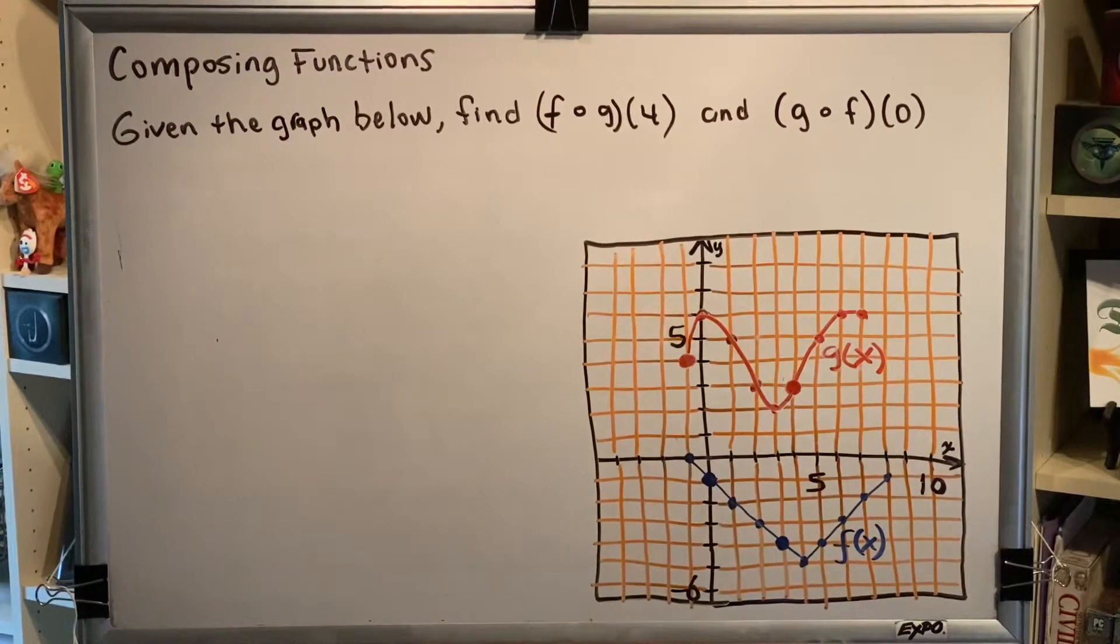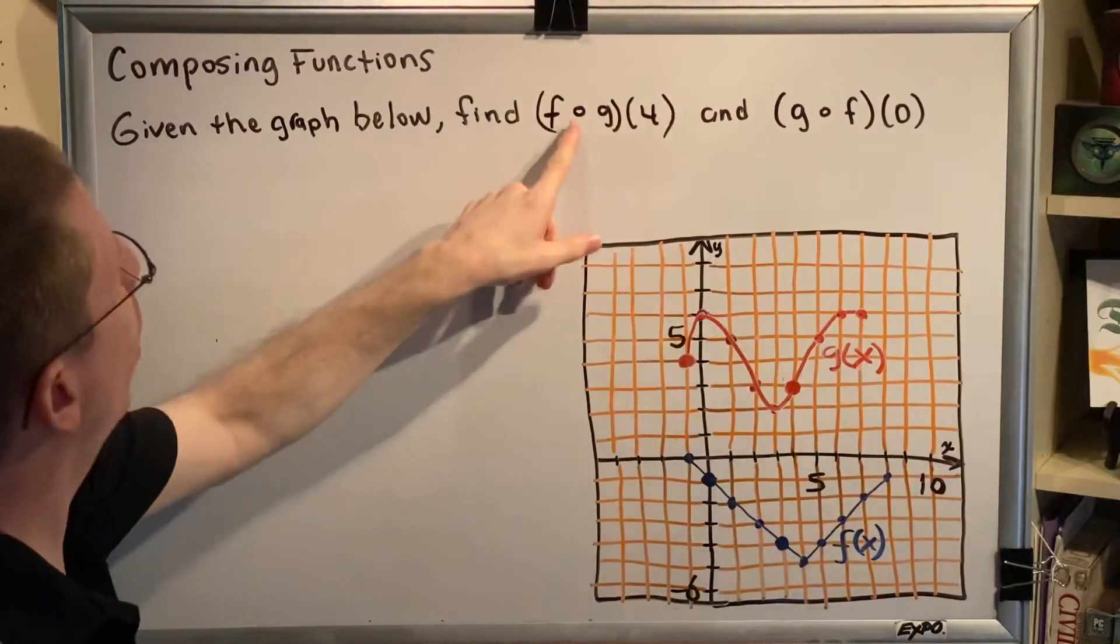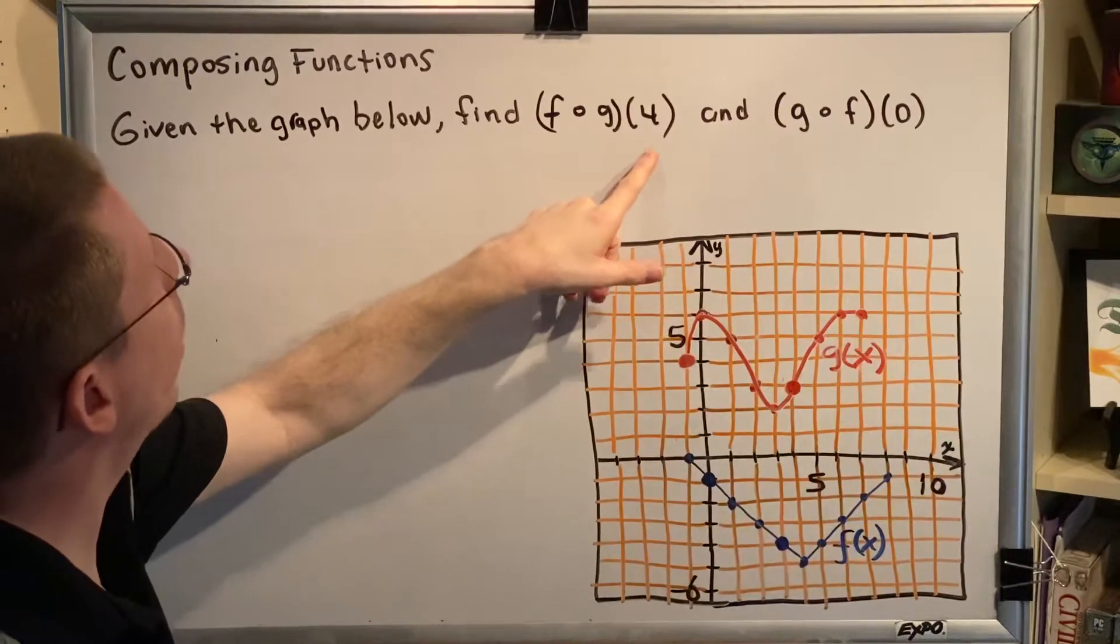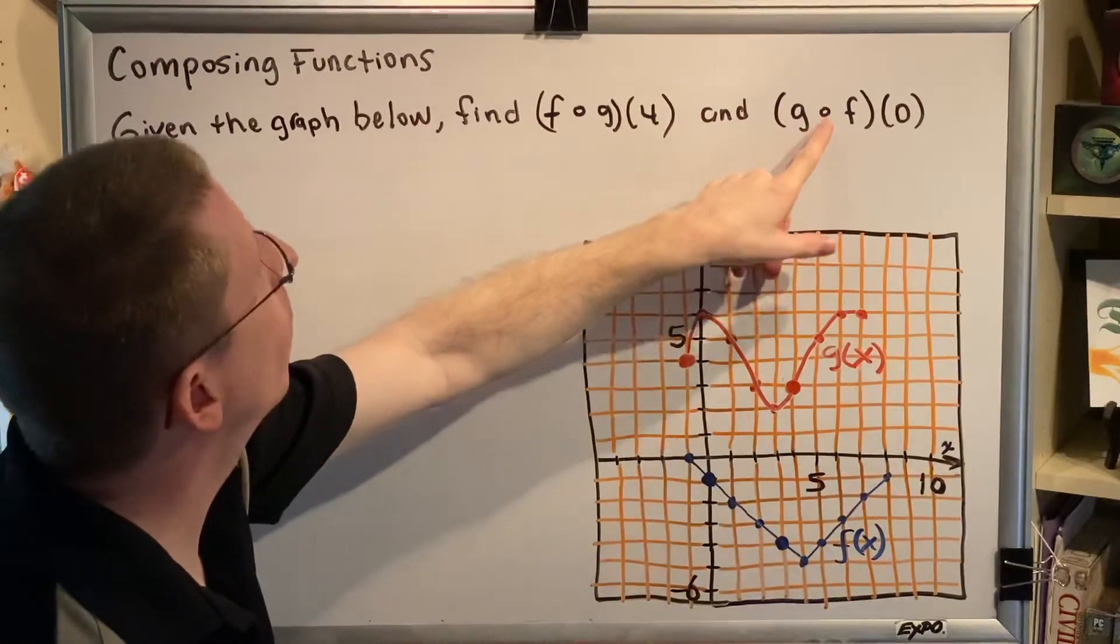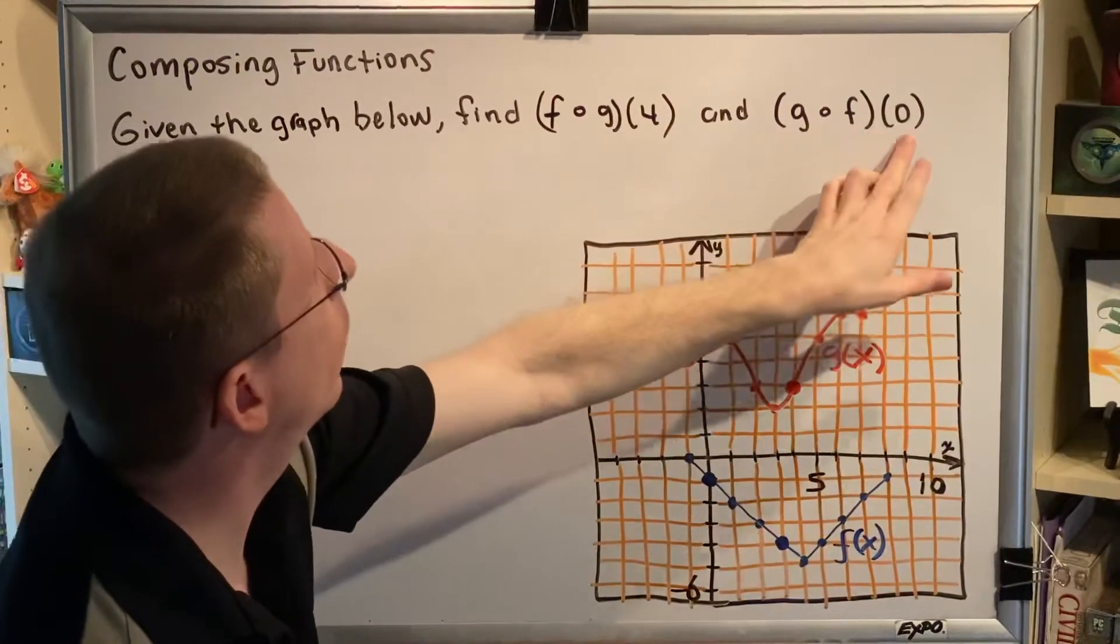The topic of this video is composing functions. Let's look at a problem. Given the graph below, find f composed with g of 4 and g composed with f of 0.